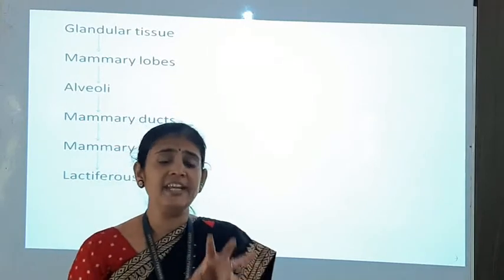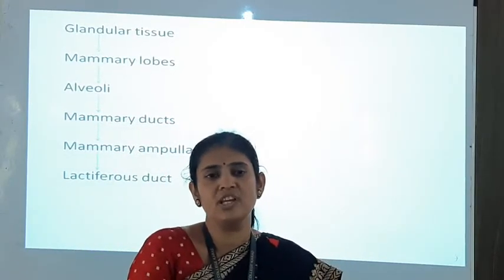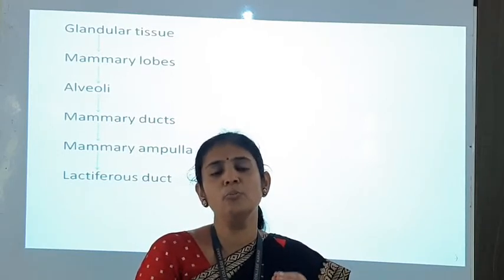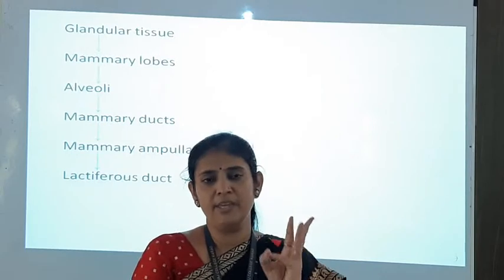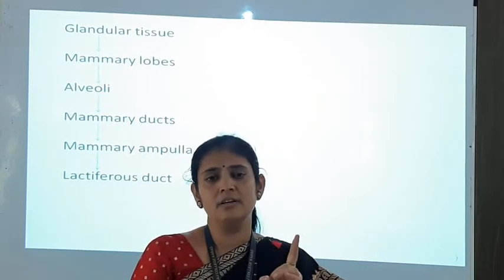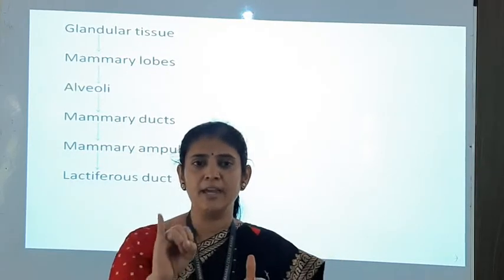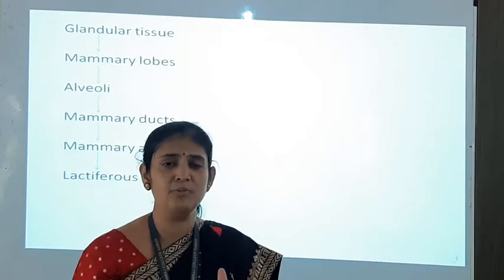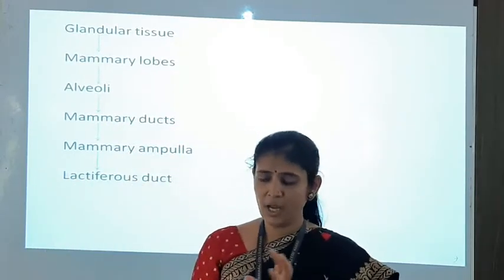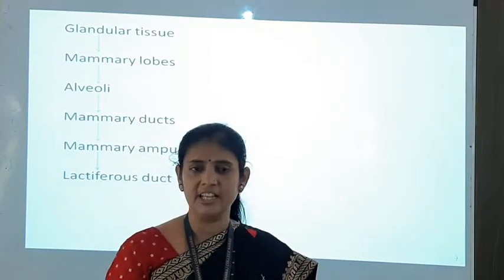These are the eight different parts of the external genitalia in the female reproductive system: first labia majora, second labia minora, third mons pubis, fourth clitoris, fifth vestibule, sixth hymen, seventh greater vestibular glands, and eighth breast. These are the different external genitalia studied in this lecture.